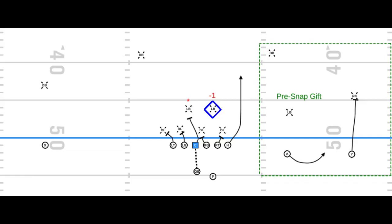The second variation attaches a pre-snap gift — a quick screen out to the perimeter with either a simple bubble from number two or a now screen from number one. The quarterback initially looks pre-snap to see if he has leverage for the quick screen — does he have numbers? In this case, he needs one over two. So if that linebacker shifts into the box to bracket the H-back, that would not be a good look for the Pop Pass RPO.